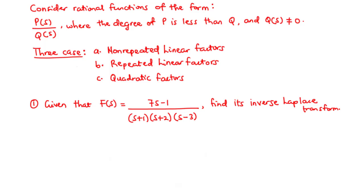In this lesson, we are going to learn how to find the inverse Laplace transforms of rational functions using the method of partial fractions. The method of partial fractions allows us to decompose a complex rational function into the sum of simple rational functions. We are going to consider rational functions of the form p(s) divided by q(s), where the degree of p is less than that of q, and q(s) is not equal to zero.